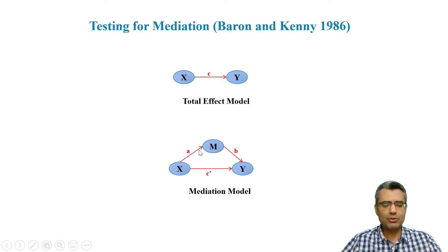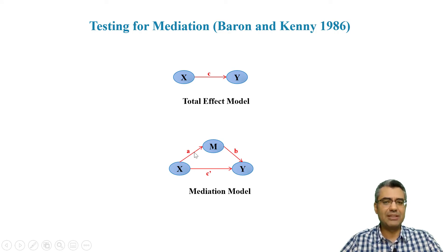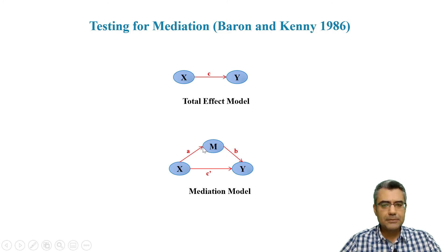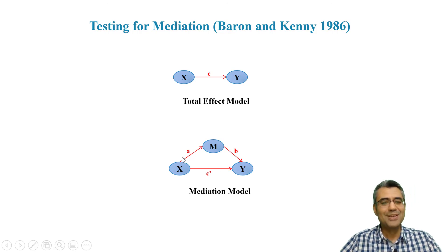Another method later developed is the Sobel test. In the Sobel test, we compute a combined standard error for paths a and b together — mixing them using the Sobel test formula — then compute the path coefficient and check whether it is significant by dividing the value by the standard error, similar to a z-score: if it is greater than 1.96, it is significant. However, the assumption for the Sobel test is that the distribution should be normal, and in most cases it is not, so there are arguments that the Sobel test is not reliable enough.